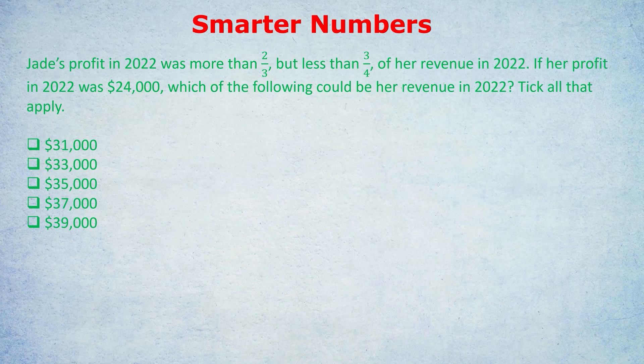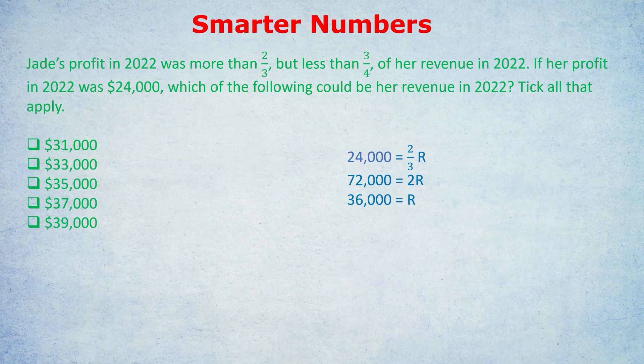Let's start by pretending that her profit of $24,000 was equal to two-thirds of her revenue. We don't know her revenue, so we need algebra — we need an equation. $24,000, her profit, was equal to two-thirds of R, R standing for revenue. Multiplying both sides by three and then dividing both sides by two, we calculate her revenue as being $36,000.